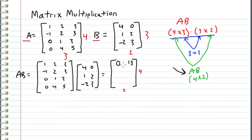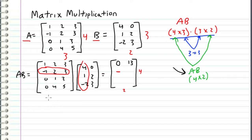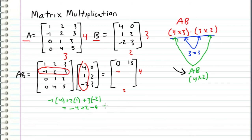Now that the first row is complete, I move on to the second row — specifically the second row and first column. I take the second row of A and the first column of B, and compute the dot product: negative one times four, plus two times one, plus three times negative two, which equals negative four plus two minus six, which equals negative eight. So I write in negative eight.